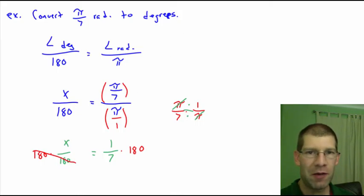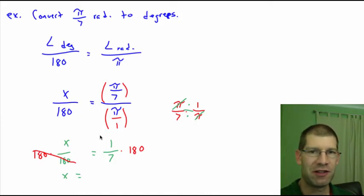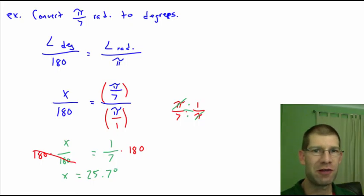So our angle in degrees equals 1 over 7. So we multiply it by 180. And we come up with x. Our angle in degrees is going to be 180 divided by 7. So if I were to punch that in my calculator, I come up with 25.7 degrees. So 25.7 degrees. And you'll probably have to be able to do that both ways, from degrees to radians, and then from radians back to degrees.